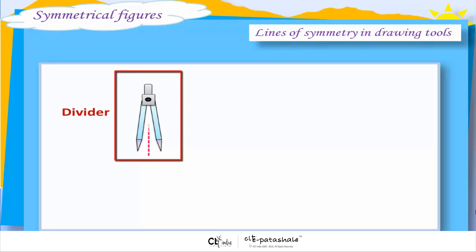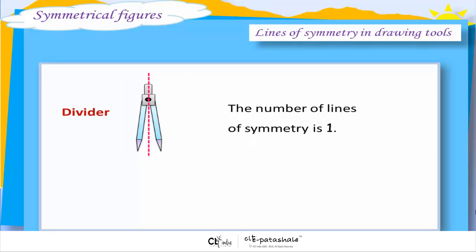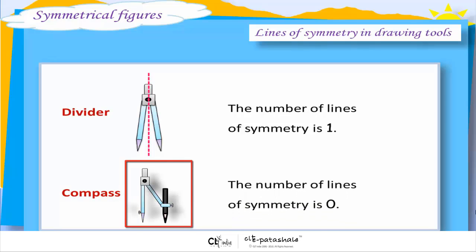Divider. The number of lines of symmetry is 1. Compass. The number of lines of symmetry is 0.